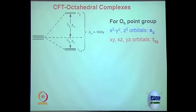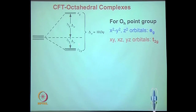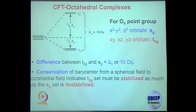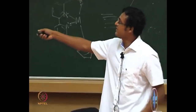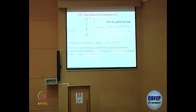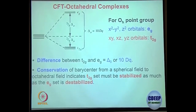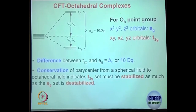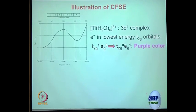The total splitting is called 10 dq or delta_0. The Eg level is 6 dq (0.6 delta_0) above the barycenter, and the T2g level is 4 dq (0.4 delta_0) below it. The energy difference between T2g and Eg is delta_0. Some orbitals are destabilized, some are stabilized.